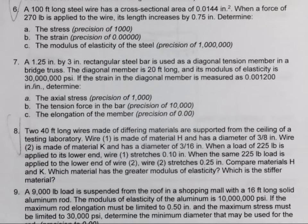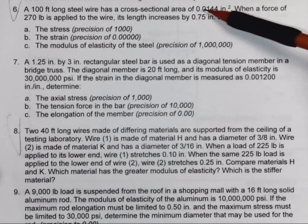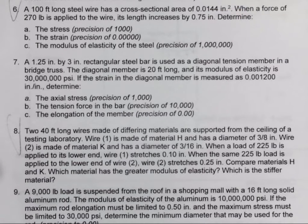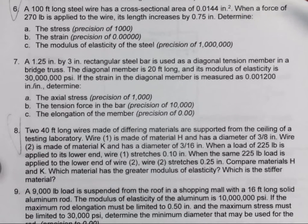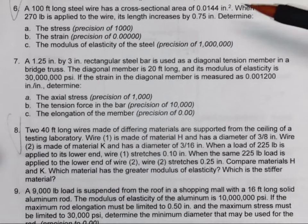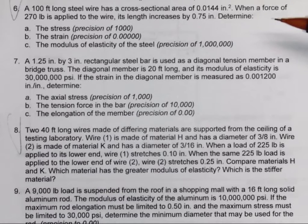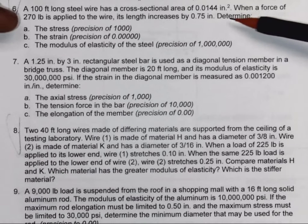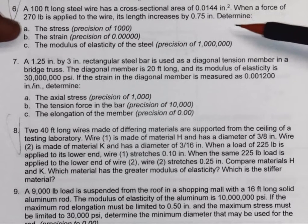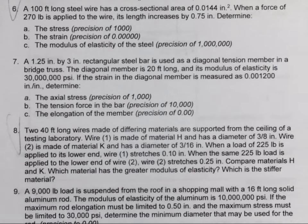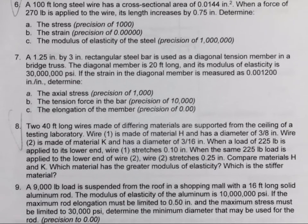As we start taking a look at some of the variables and things we have to work with here, you have a 100 foot long steel wire that has a cross-sectional area of 0.0144 square inches. When a force of 270 pounds is applied to the wire, its length increases by 0.75 inches. Very similar to number five, but now they want us to determine three things: the stress, the strain, and the modulus of elasticity of the steel.